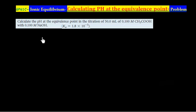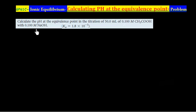This problem illustrates calculating pH at the equivalence point. The question says: calculate the pH at equivalence point in the titration of 50 mL of 0.1 M acetic acid with 0.1 M NaOH. So this is a case of weak acid and strong base titration.